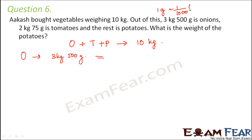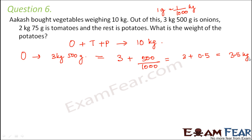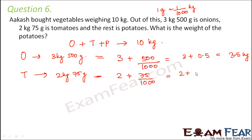We know that 1 gram equals 1/1000 kg. So 3 kg 500 grams becomes 3 plus 500/1000, which is 3 plus 0.5, equal to 3.5 kg. For tomatoes, 2 kg 75 grams becomes 2 plus 75/1000, which is 2 plus 0.075, equal to 2.075 kg.